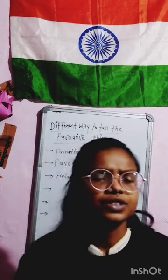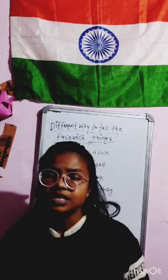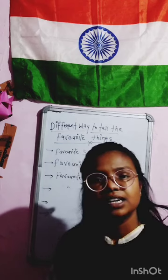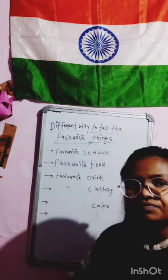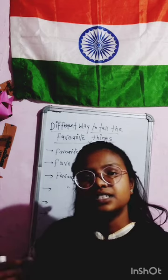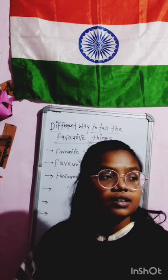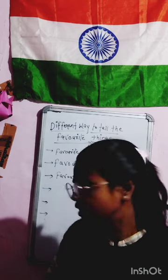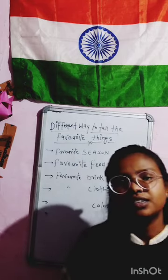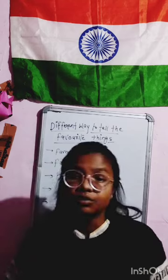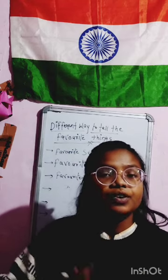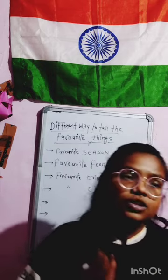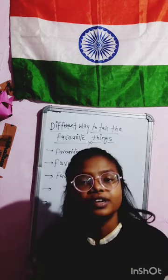You can tell another person about your favorite clothing as well. If someone asks what type of clothes you like — in my case, I like kurta and pants, which can also be considered a traditional dress. About color, I like navy blue color, or you can say I prefer navy blue color most.